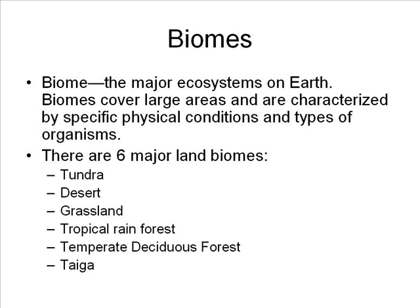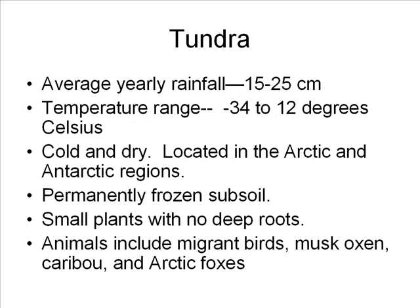Biomes are the major ecosystems on Earth. They cover large areas and are characterized by specific physical conditions and types of organisms. There are six major land biomes: the tundra, the desert, the grasslands, the tropical rainforest, the temperate deciduous forest, and the taiga.